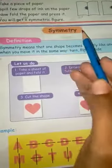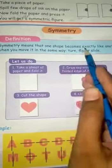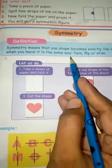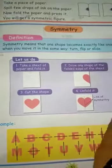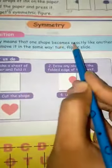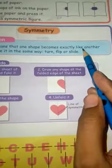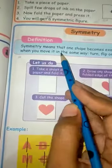Now we are studying symmetric patterns. Symmetric means that one shape becomes exactly like another when you move it in the same way — turn, flip, or slide. One side matches exactly the other side.